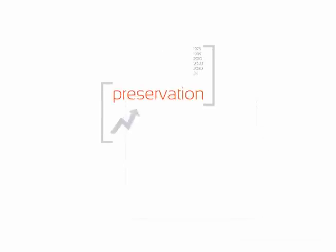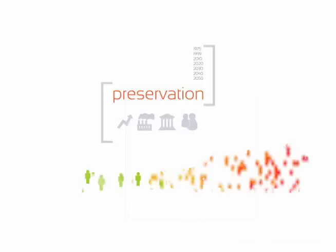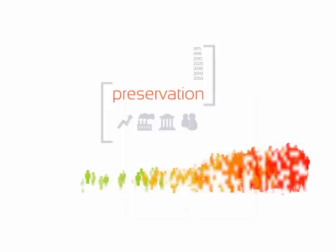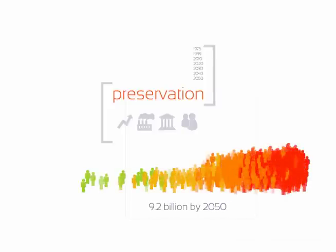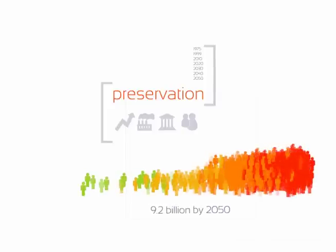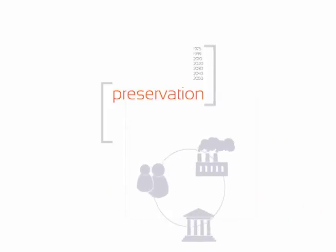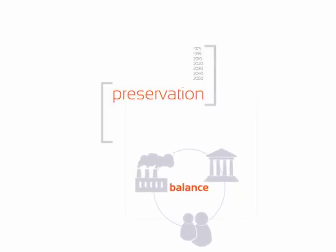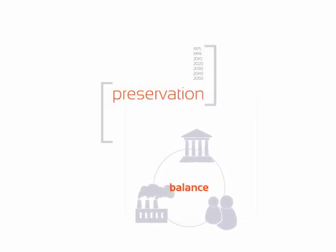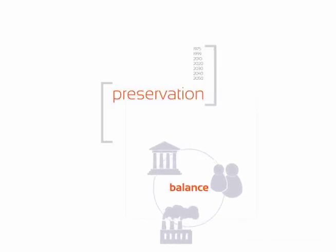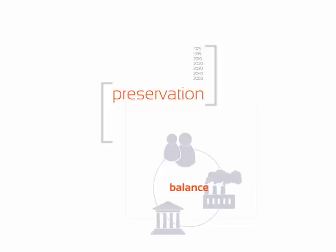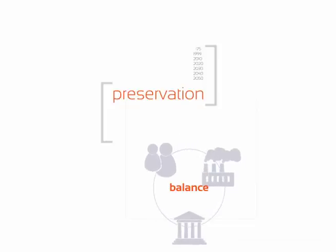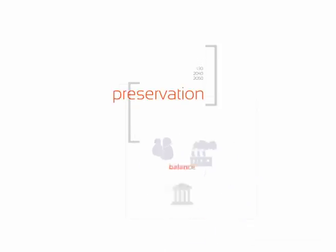Preservation: as our population continues to grow and is expected to reach 9.2 billion by the year 2050, we must find a healthy balance between our social systems, social networks, and consumption. After all, we only have one home.